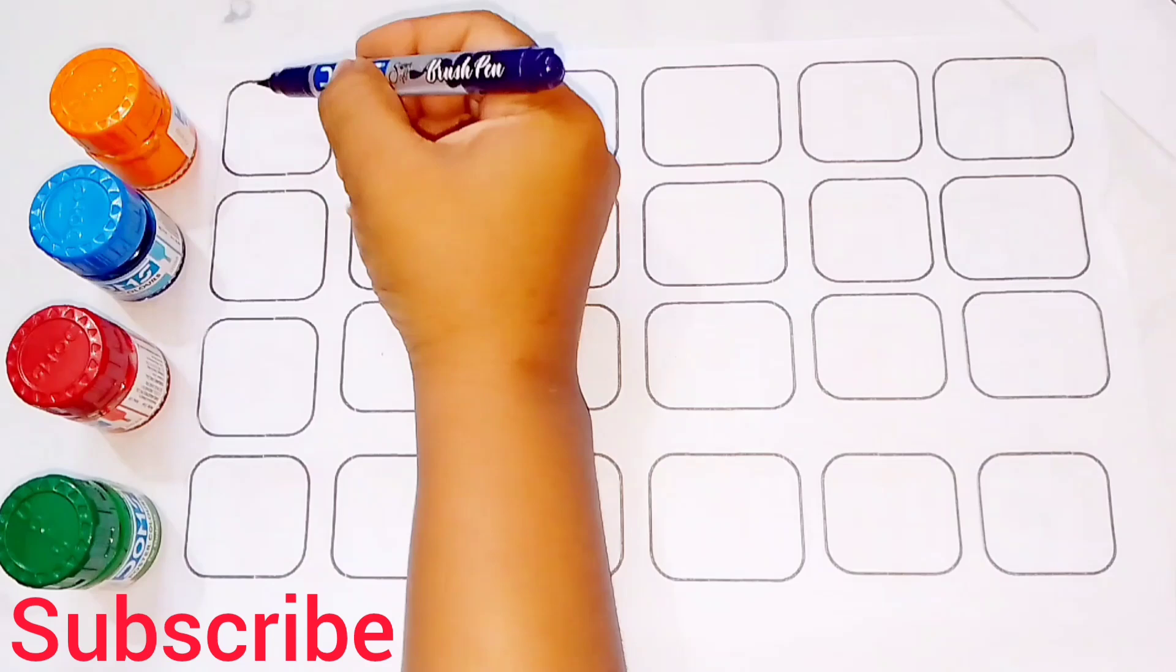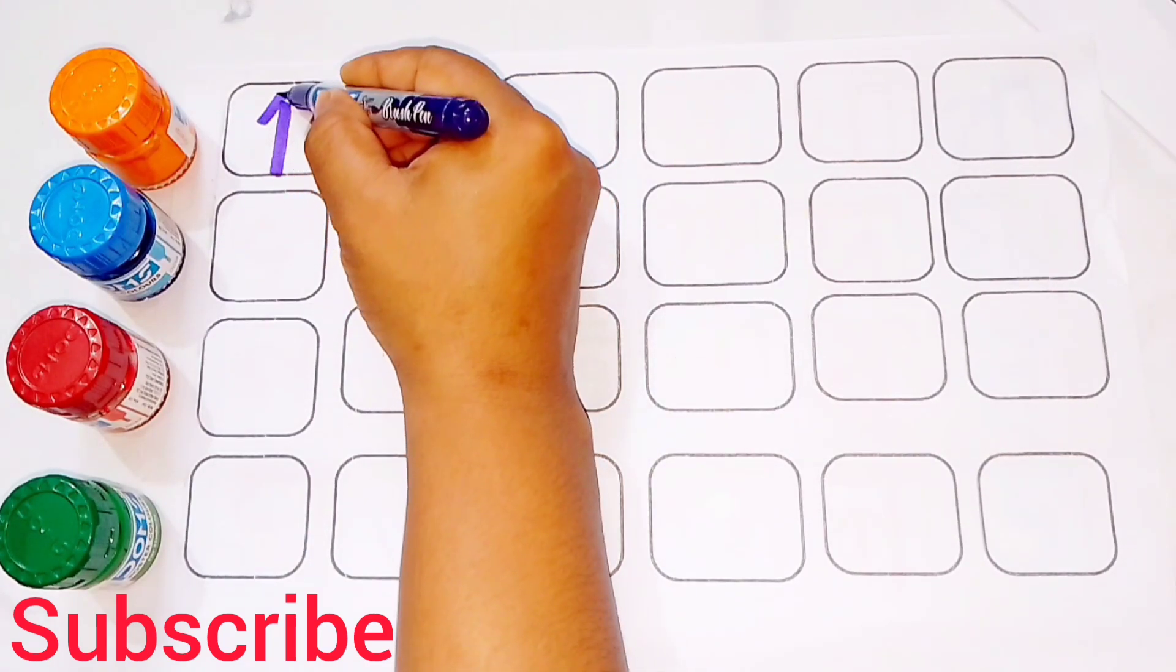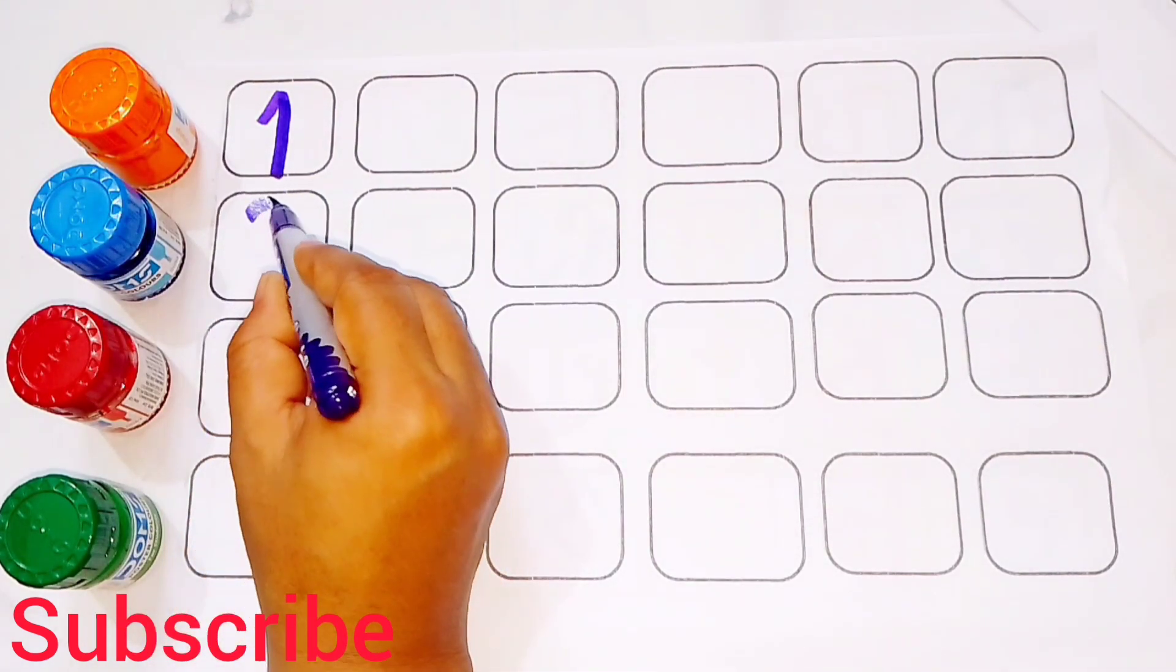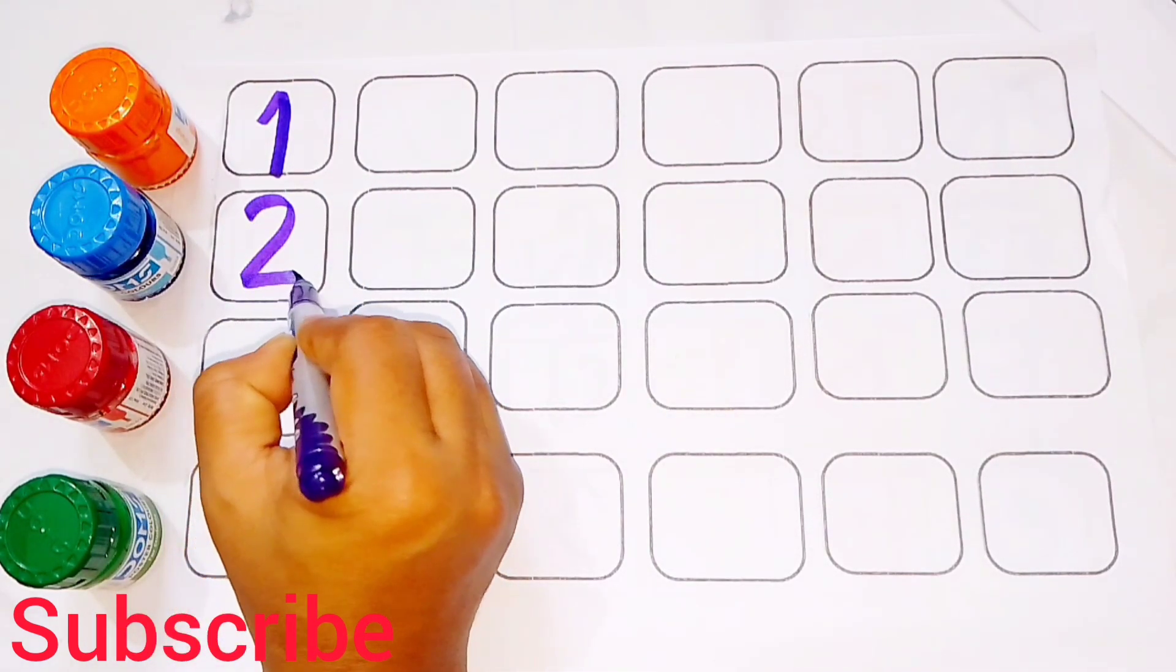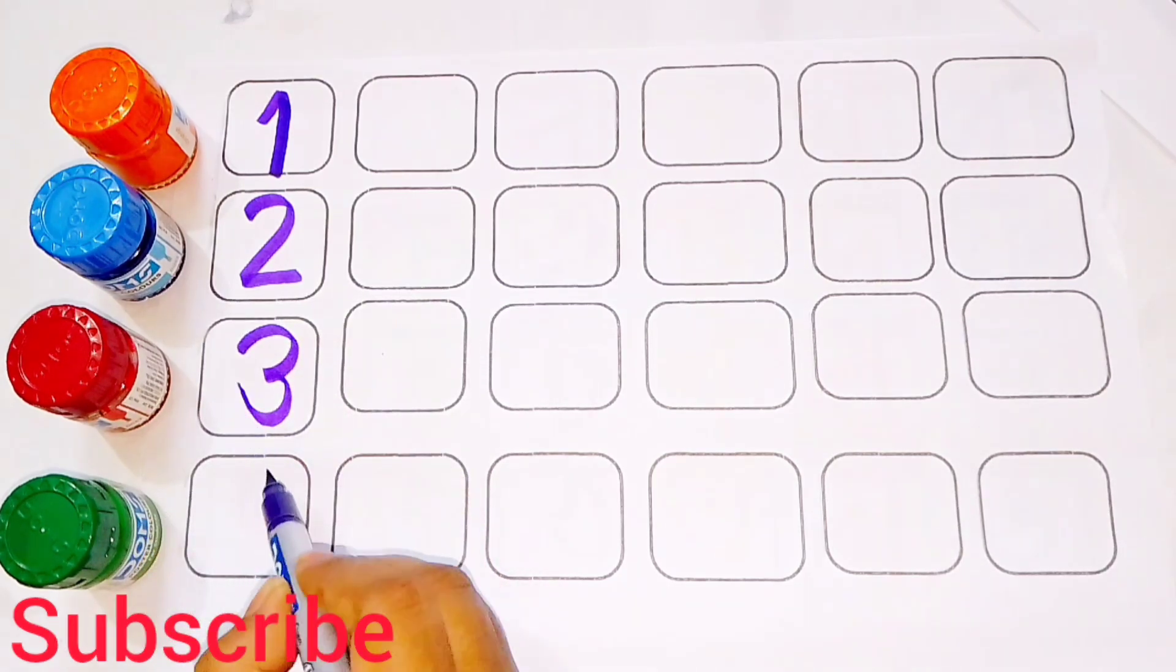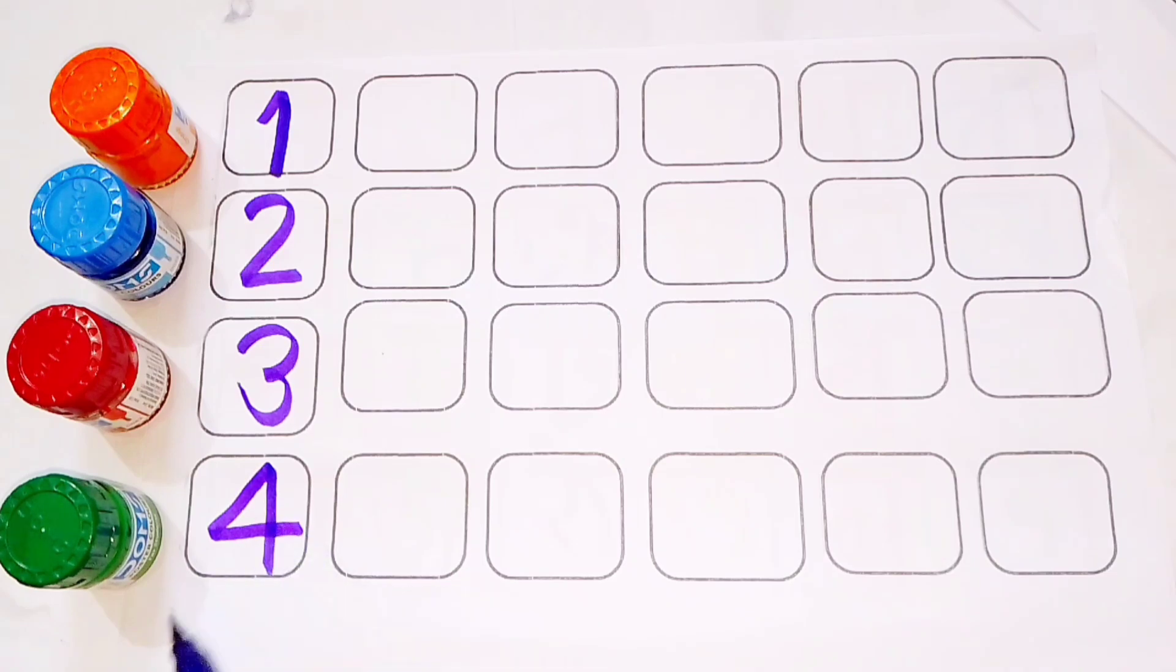Counting numbers 1, 2, 3. Purple color 1. O, N, E, 1. Purple color 1, 2. T, W, U, 3. T, H, R, W, 3. 4. F, O, U, R, 4.